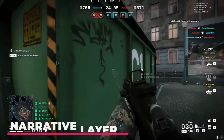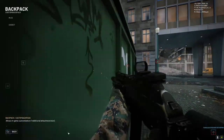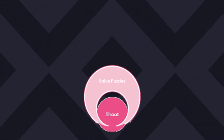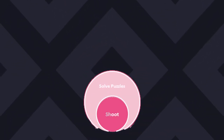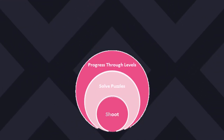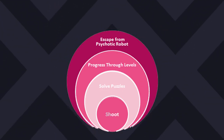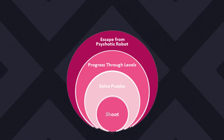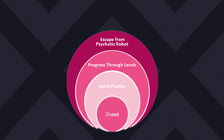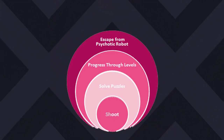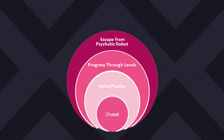Now that you better understand the model, let's run through some examples. For the core in the center we have 'shoot,' the secondary mechanic is solving puzzles, then progressing through the levels, and the narrative is escaping from the psychotic robot. Maybe you can guess what game is referenced here — that should be fairly simple if you've ever played Portal.